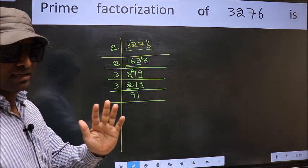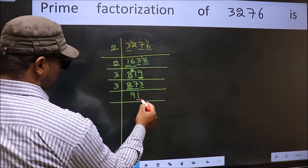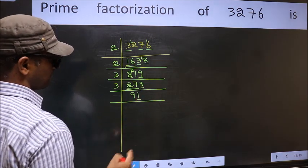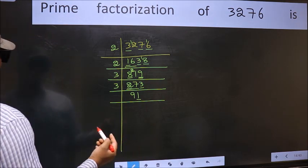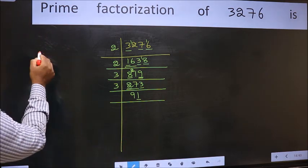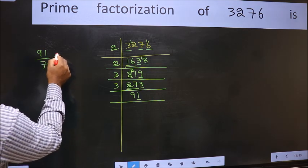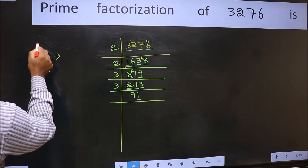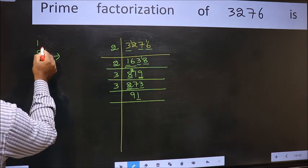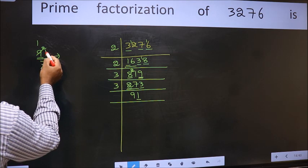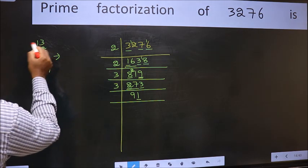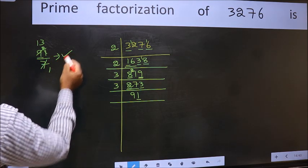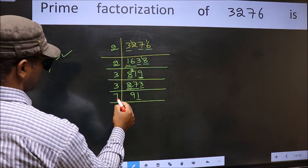Next prime number 5. The last digit is neither 0 nor 5, so this is not divisible by 5. Next prime number 7. Let us check divisibility by 7. A number close to 9 in the 7 table is 7 times 1 equals 7. 9 minus 7 equals 2, carry forward 21. When do we get 21 in the 7 table? 7 times 3 equals 21. No remainder is left, so this is divisible by 7. So take 7 here.